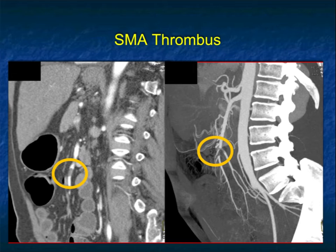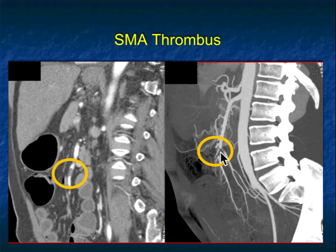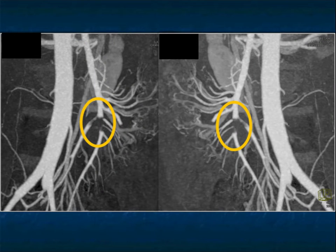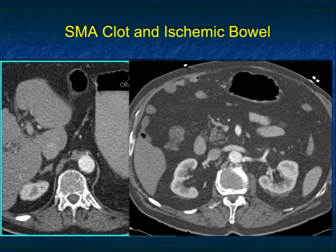In this case, the celiac, SMA, aorta, and IMA all look good, but there's an embolic phenomenon — a thrombus right in the SMA. On 3D imaging, the vessel is cut off. This emphasizes the importance of looking distally at the vessel. We always look proximally because we expect atherosclerotic disease there, but you want to look distally because that may be where the thrombus is. MIP imaging is very helpful in that regard, and as you rotate the MIP images you can really see the critical location of the thrombus, which was eventually removed and the patient recovered.